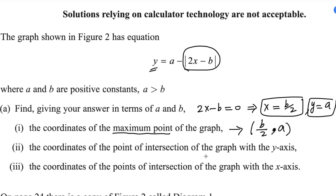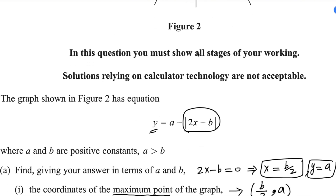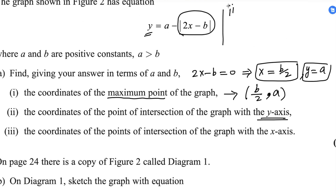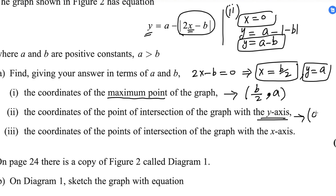For the second part, the coordinates of the intersection with the y-axis: along the y-axis, x equals zero. Substituting x equals zero into the equation gives y equals a minus the absolute value of 0 minus b, which is a minus the absolute value of minus b. Since absolute value is always positive, this equals a minus b. So the coordinates are (0, a minus b).